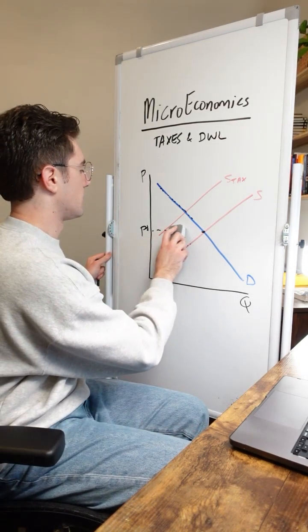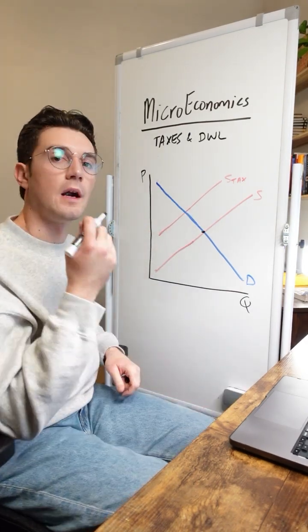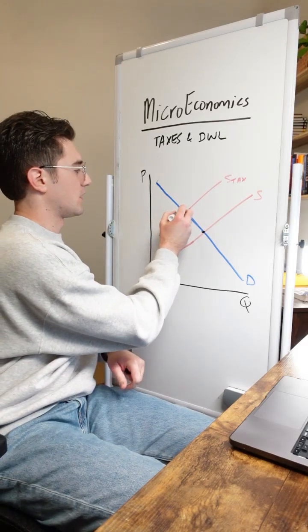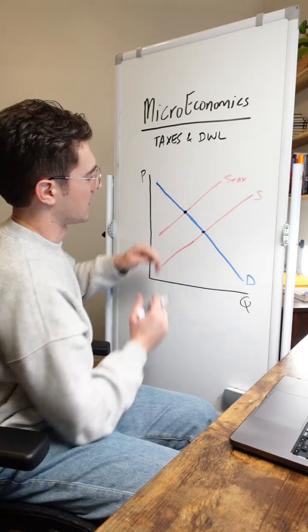All right, now I'm going to remove that original equilibrium price to consider what happens when the tax comes into play. All right, with the tax, this market's going to really operate at this point right here, because that's the intersection of the supply plus tax and demand curves.